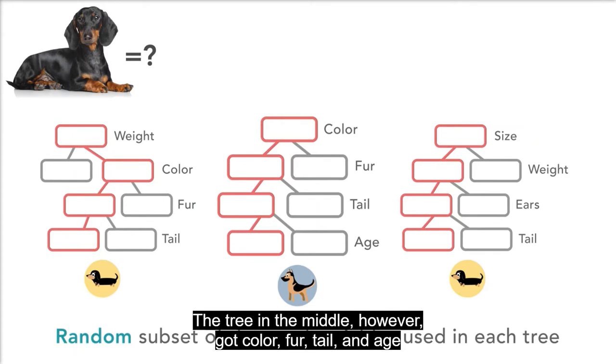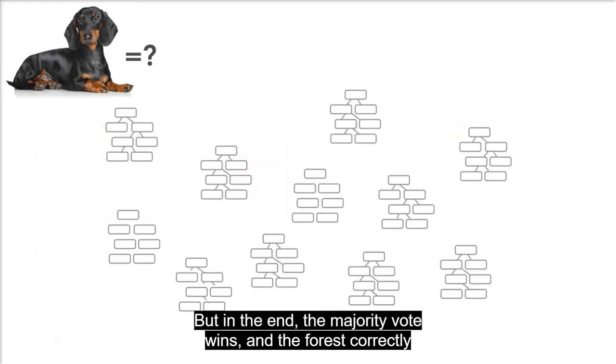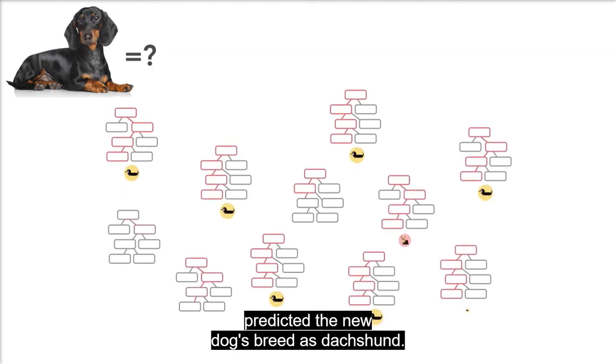The tree in the middle, however, got color, fur, tail, and age, and incorrectly identified the dog as a German Shepherd. But in the end, the majority vote wins, and the forest correctly predicted the new dog's breed as dachshund.